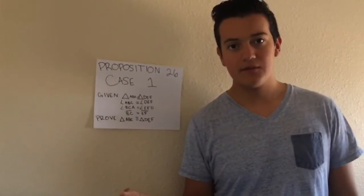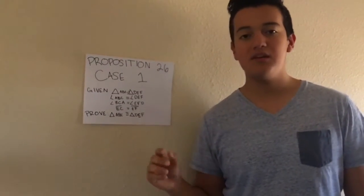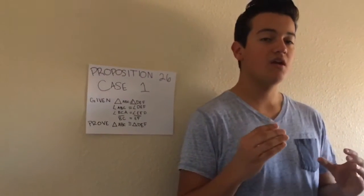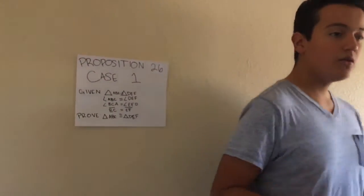But what we have to do in this specific proposition is we have to prove that ABC is congruent to DEF, which means if you get both of the figures and overlap them, that means they're going to be exactly the same. Let's go on to step one.